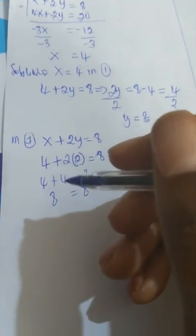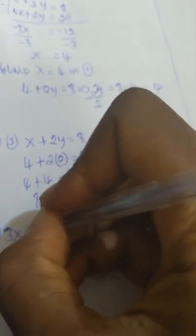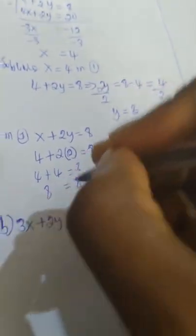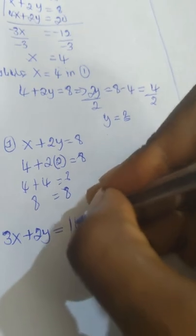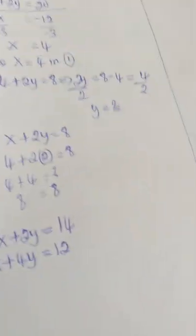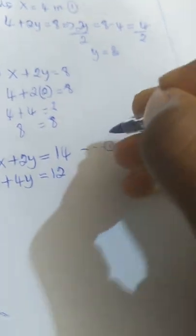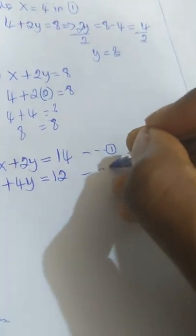Now we take the second exercise, part b. We have 3x plus 2y equal to 14, and x plus 4y equal to 12. This is equation one and this is equation two.